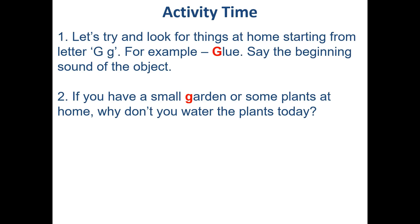Activity time, children! Let's try and look for things at home starting from the letter G. When you find the object, say the beginning sound — for example, glue: G, G, glue. And children, if you have a small garden or some plants at home, why don't you water the plants today? I also hope you are all being good children. Help mama — she has a lot of work these days. Take care, bye bye!